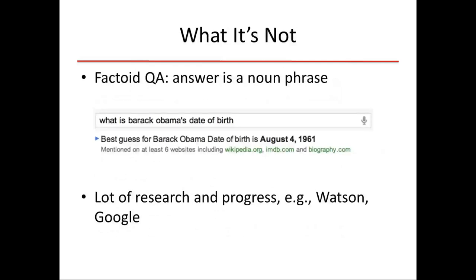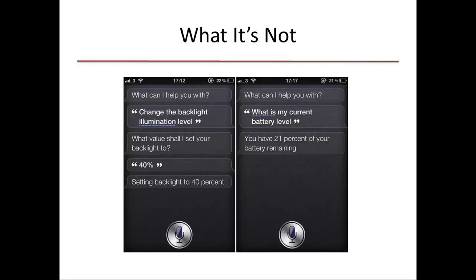Before going into detail on what non-factual QA is, let me say a couple of slides on what it's not. Non-factual question answering is, surprisingly, not factual QA. Factual QA is when the answer is a noun phrase — for example, what is Barack Obama's date of birth? The answer is just a simple noun phrase. They can answer this precisely using the knowledge graph, and it's been studied extensively for the past 15 years with very good models, including Google and IBM's Watson question answering engine.